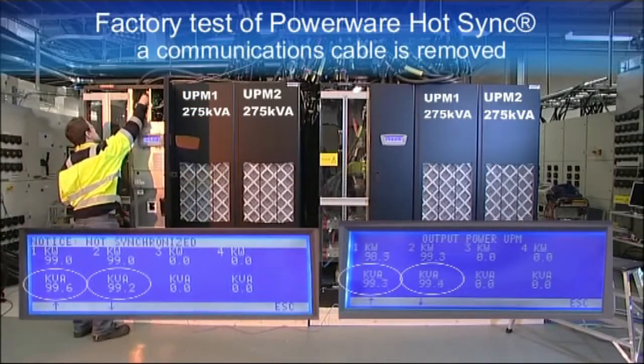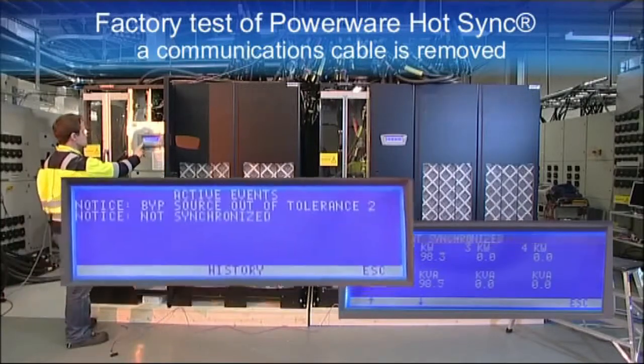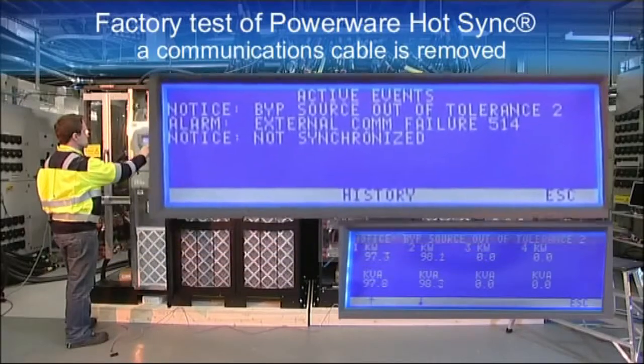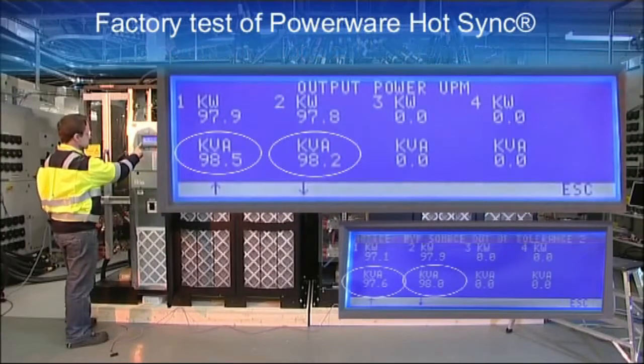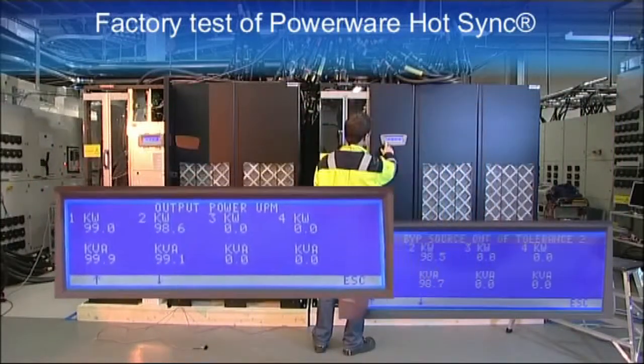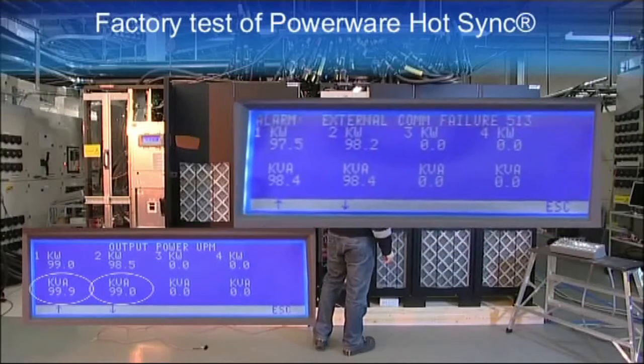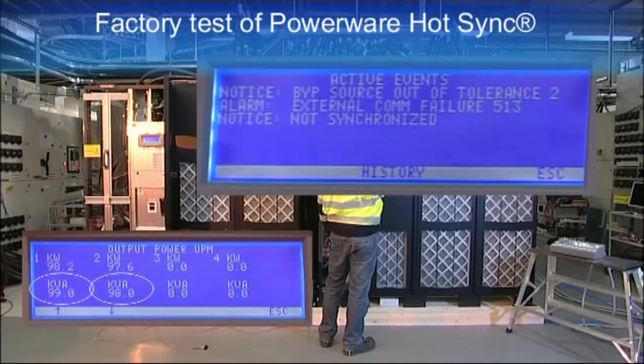What happens to the critical load if the communication breaks down? The inverter continues functioning normally and the load is shared evenly between the units. The units notice the communication breakdown and alarms are activated. Parallel communication error means that the communication to the other units is broken down.